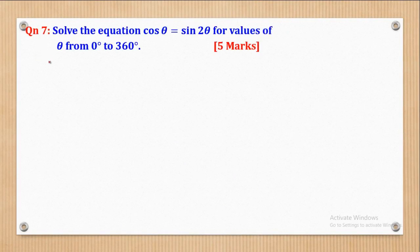We now go to question 7. Question 7 says: solve the equation cos θ = sin 2θ for values of θ from 0° to 360°, and it carries 5 marks. We are going to go through this solution step by step so that we don't miss any mark.